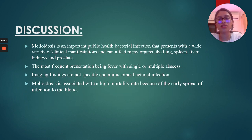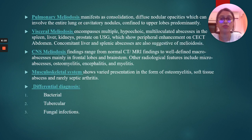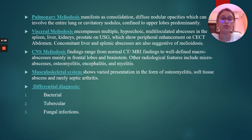Discussion: Meliodosis is an important public health bacterial infection that presents with a wide variety of clinical manifestations affecting the lungs, spleen, liver, kidneys, and prostate — the most frequent presentation being fever with single or multiple abscesses. Imaging findings are not always specific and may mimic other bacterial infections. It has a high mortality rate owing to early spread of infection to the blood. Pulmonary meliodosis manifests as consolidation, diffuse nodular opacities involving the entire lung, or cavitatory nodules confined predominantly to the upper lobes. Visceral meliodosis encompasses multiple hypoechoic multi-loculated abscesses in the liver, spleen, kidneys, and prostate on ultrasound, which show peripheral enhancement with internal enhancing septae on contrast-enhanced CT of the abdomen.